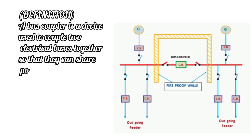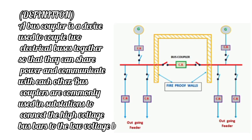A bus coupler is a device used to couple two electrical buses together so that they can share power and communicate with each other. Bus couplers are commonly used in substations to connect the high-voltage bus bars to the low-voltage bus bars.